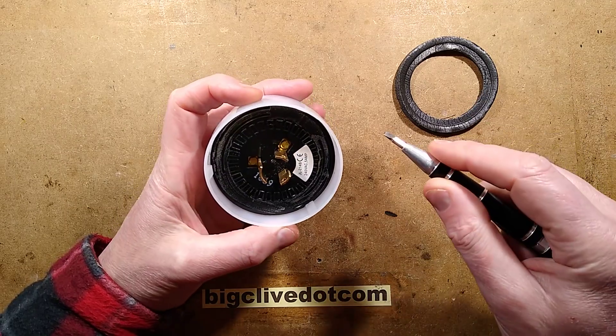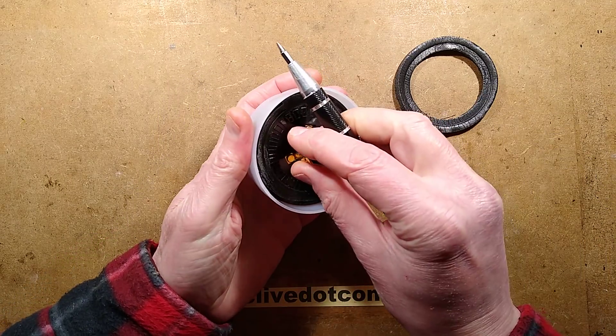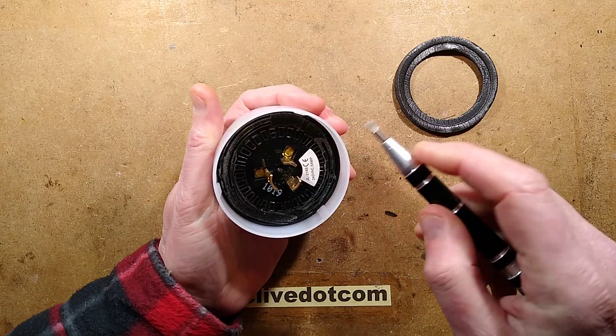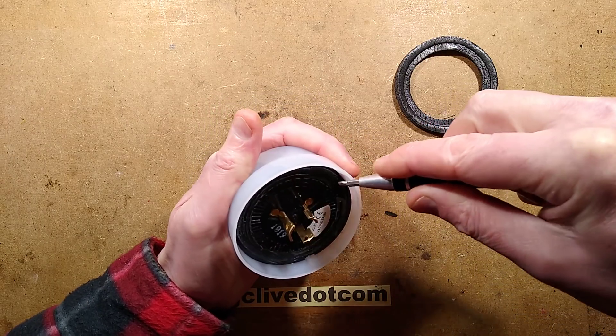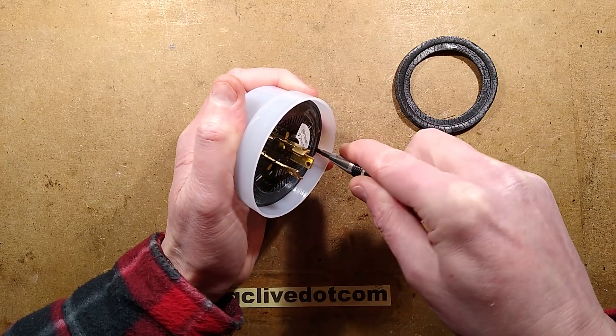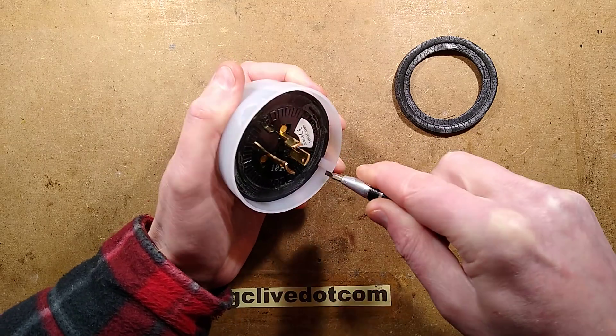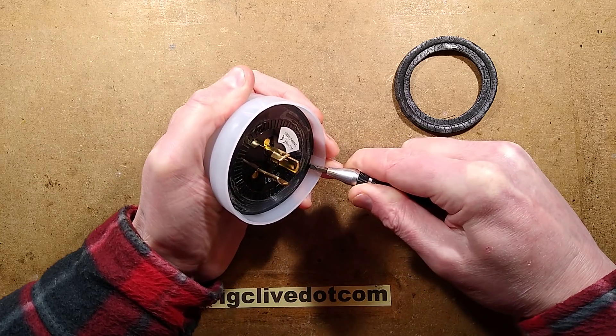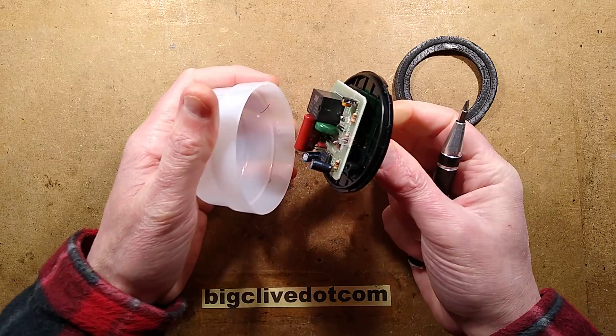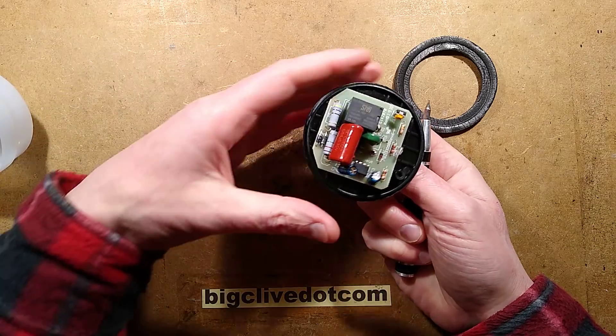So it's got this foam sealing ring and it looks to all intents and purposes, unless they've glued it, it looks as though it's just held in by wedges. It is held in by wedges. It's just clipped in. It is a mass produced device. But this is one of these ones that it's going to take a bit of force to get that out. It's not too bad.